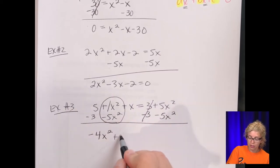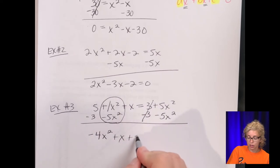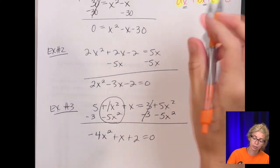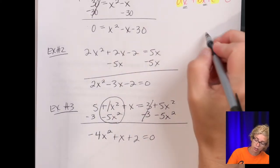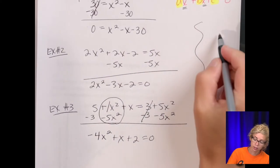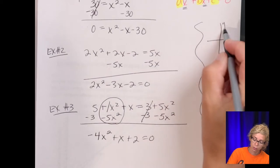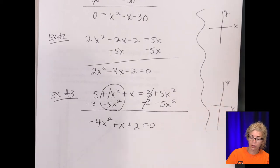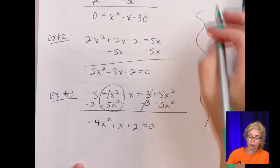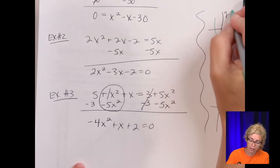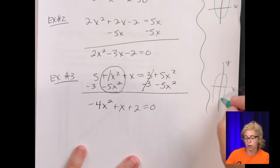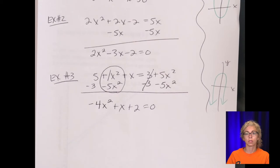And then the x: five minus three is two. Now, positive x squared graphs look like a U shape, and negative x squared graphs are upside down. So that is in standard form. Just to review: the roots are where the graph crosses the x-axis, and you can always check on your calculator.